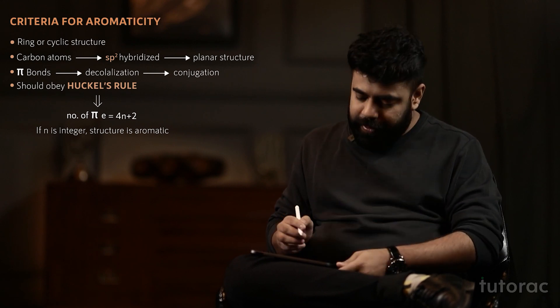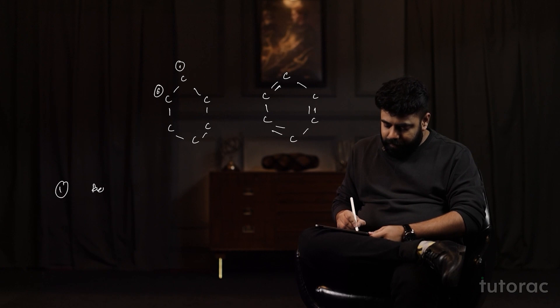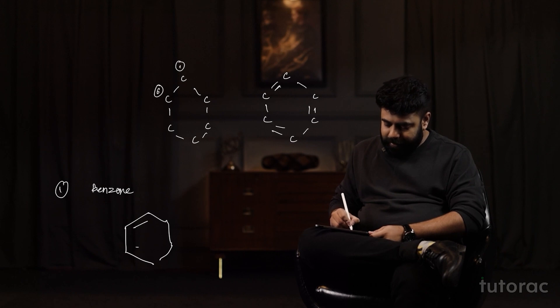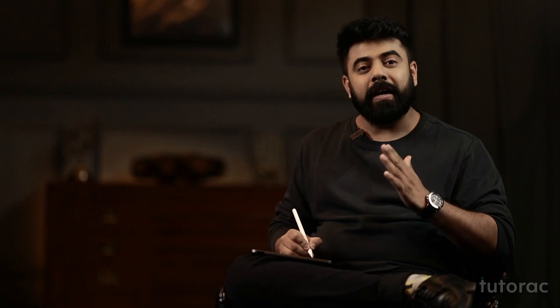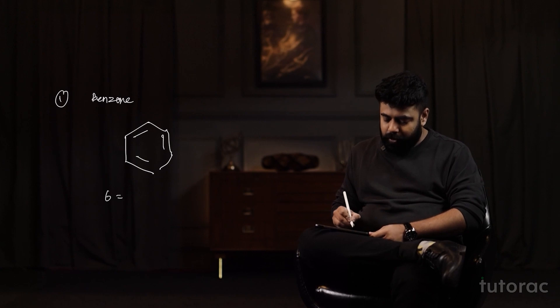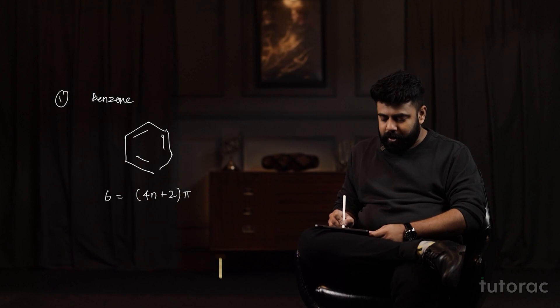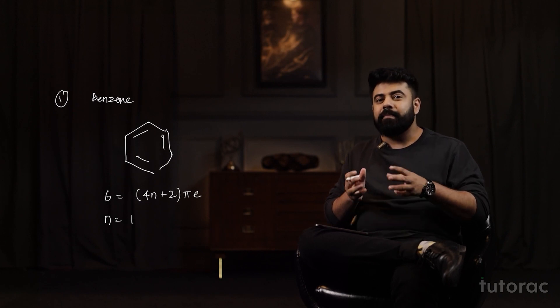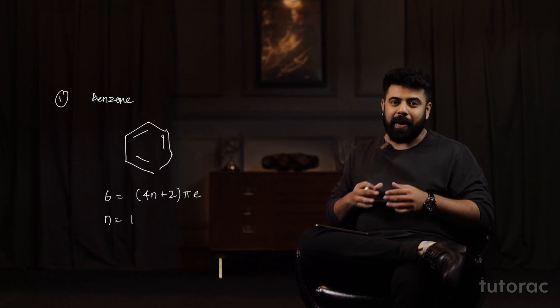Let us take a structure of benzene. The structure of benzene appears somewhere like this. As you can see, there are 3 pi bonds, which means there are 6 pi electrons, and this should be equal to 4n + 2 pi electrons. When I substitute the values, the value of n comes out to be equal to 1. Since it is an integer, benzene is confirmed to be an aromatic compound.